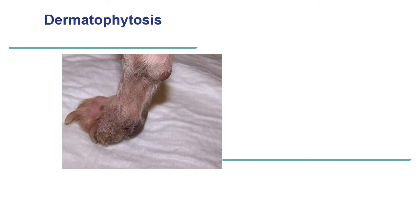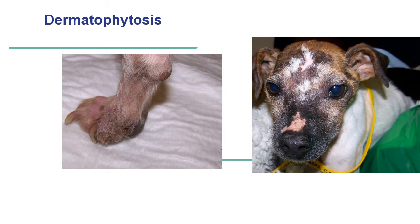This is a case of dermatophytosis in an elderly Jack Russell Terrier who was also immunosuppressed with corticosteroids and cyclosporine due to immunomediated thrombocytopenia. You can see the presence of alopecia, very subtle erythema, patchy hyperpigmentation, and comedones. The alopecia involves not only the feet but also the face, and there is some muscle atrophy secondary to the immunosuppressive treatments.